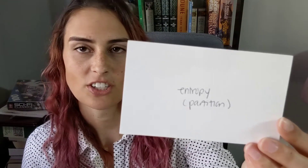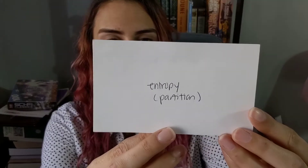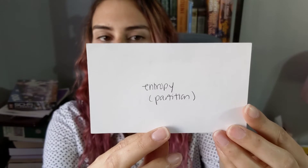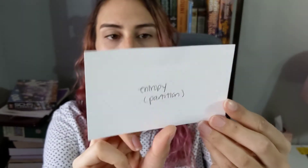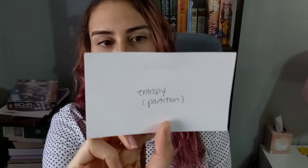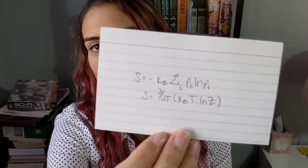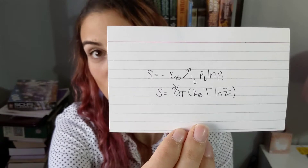The partition definition of entropy: this is S equals negative k_B times the sum over p sub i log p sub i, or also the partial derivative with respect to T of k_B T log Z, where Z is the partition function.